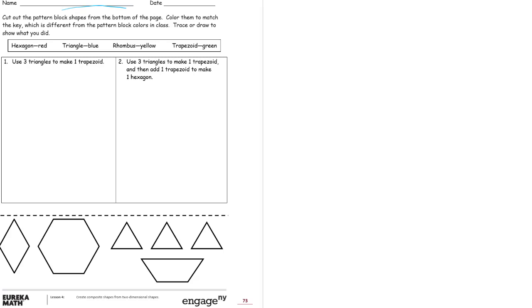The hexagon should be red, so I'm going to color in the hexagon red. The triangles should be blue, so these guys are going to be blue. The rhombus should be yellow, that's this guy here. And the trapezoid should be green, and that's this guy here.